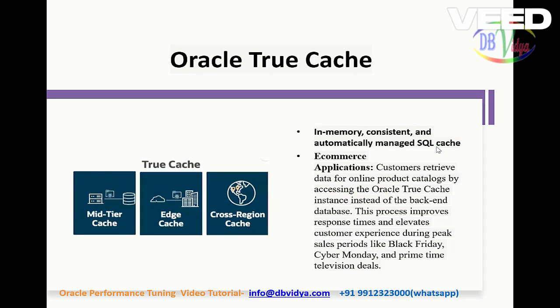The first feature is Oracle TrueCache. If you are accessing any web-enabled application and you give a query which has to touch the Oracle database, then it has to do a round trip — it has to go to the database, query it, and give the result back to the web form. This is also a performance issue while tuning web-enabled forms with many SQL queries. For such problems, Oracle TrueCache is a very good solution. It won't go to the backend; it will access the TrueCache and the result is given back directly. Oracle claims this gives good performance.